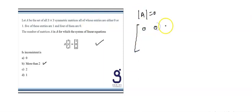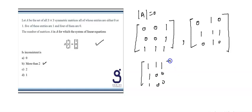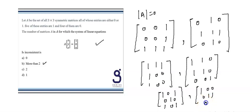For det(A) = 0, we enumerate symmetric matrices. Some examples: [0,0,0; 0,1,0; 0,0,1], [0,1,0; 1,1,1; 0,1,0], [1,1,1; 1,1,0; 0,0,0], [1,1,1; 1,1,1; 1,1,1], [1,0,1; 1,1,1; 1,0,1], [1,0,0; 0,0,1; 1,1,0]. All of these are symmetric matrices with zero determinant.